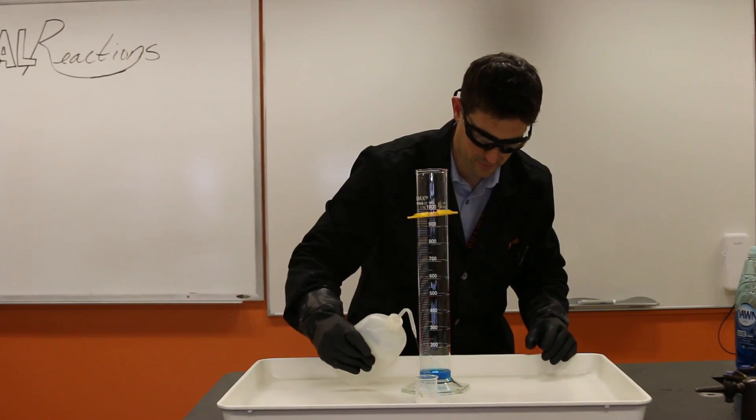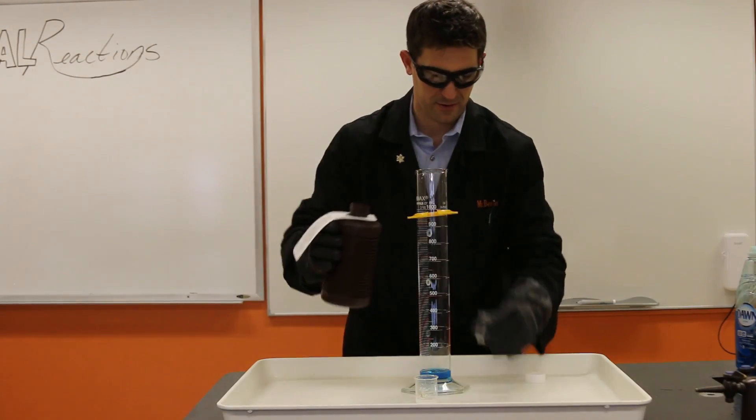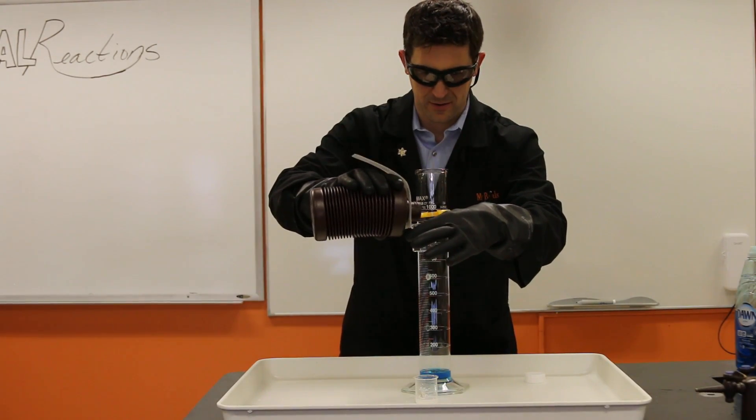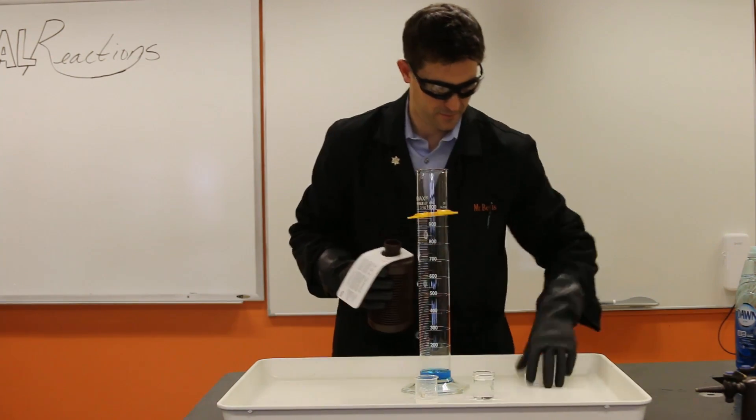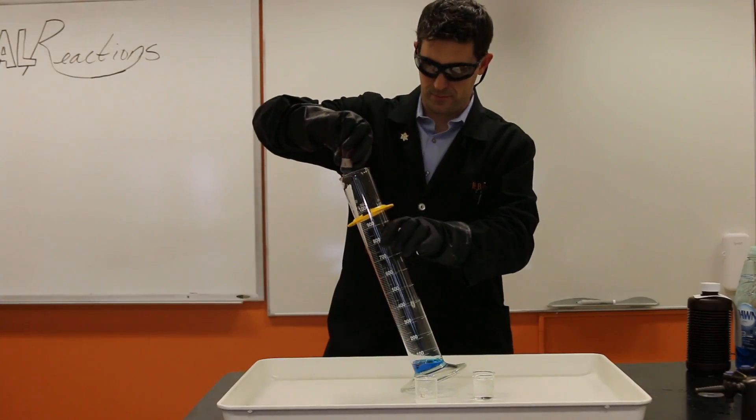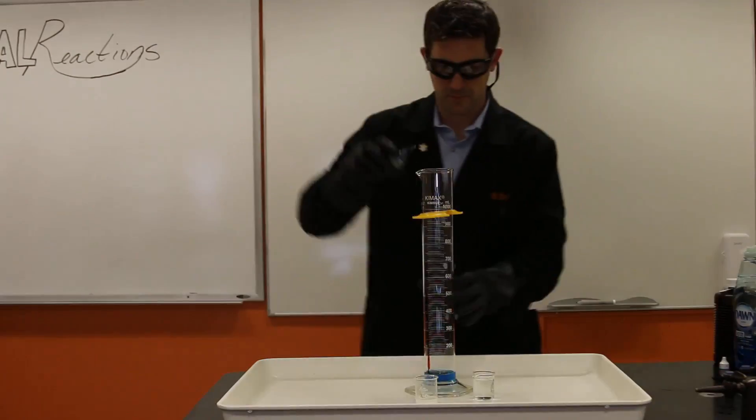And I'm adding a little bit of water, just so that catalyst can move around more easily and into the solution. Now the bottle here is 30% hydrogen peroxide. So it's the really strong stuff, which is why I have the gloves.